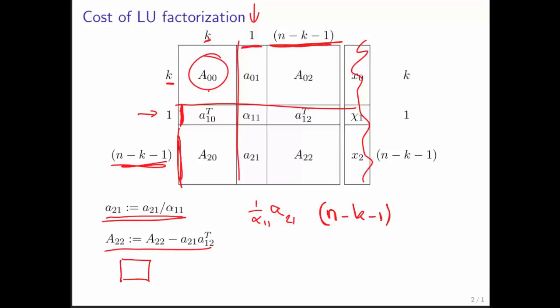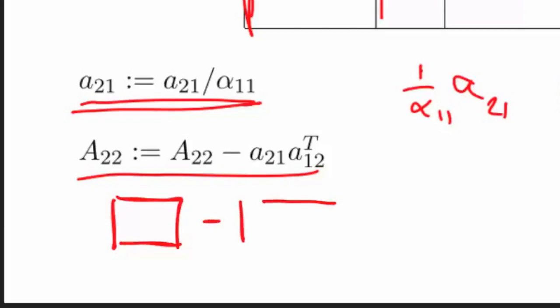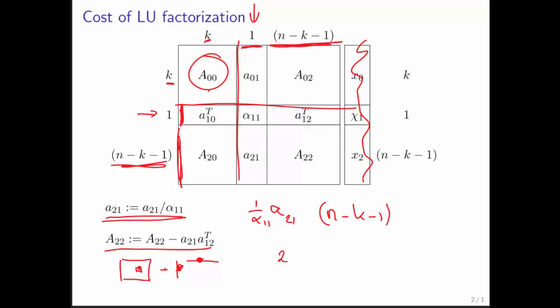This here is a rank 1 update. Remember that in a rank 1 update, each element in the matrix being updated is updated by doing a multiply of the corresponding element in the first vector times the corresponding element in the other vector. So that means a multiply and subtract, but let's call it an add, to update each individual entry in the matrix, so that means two floating point operations. We know how many rows and columns it has, therefore we know it's 2 times n minus k minus 1 squared.